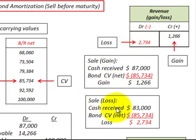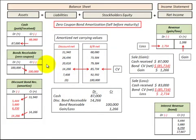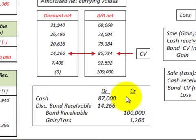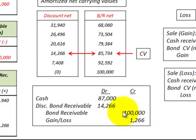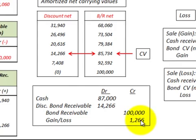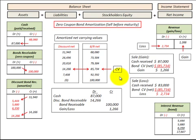After the sale, we close out our bonds receivable account and also close out the discount to bonds receivable, then debit cash for the amount received on that sale and recognize a gain of $1,266 in our revenue account. Looking at the balancing of debits and credits: cash for $87,000 plus the discount to bonds receivable of $14,266 in our debit column balances with bonds receivable closing at $100,000 and the gain of $1,266. That's how we recognize any gain or loss on the sale of a bond.